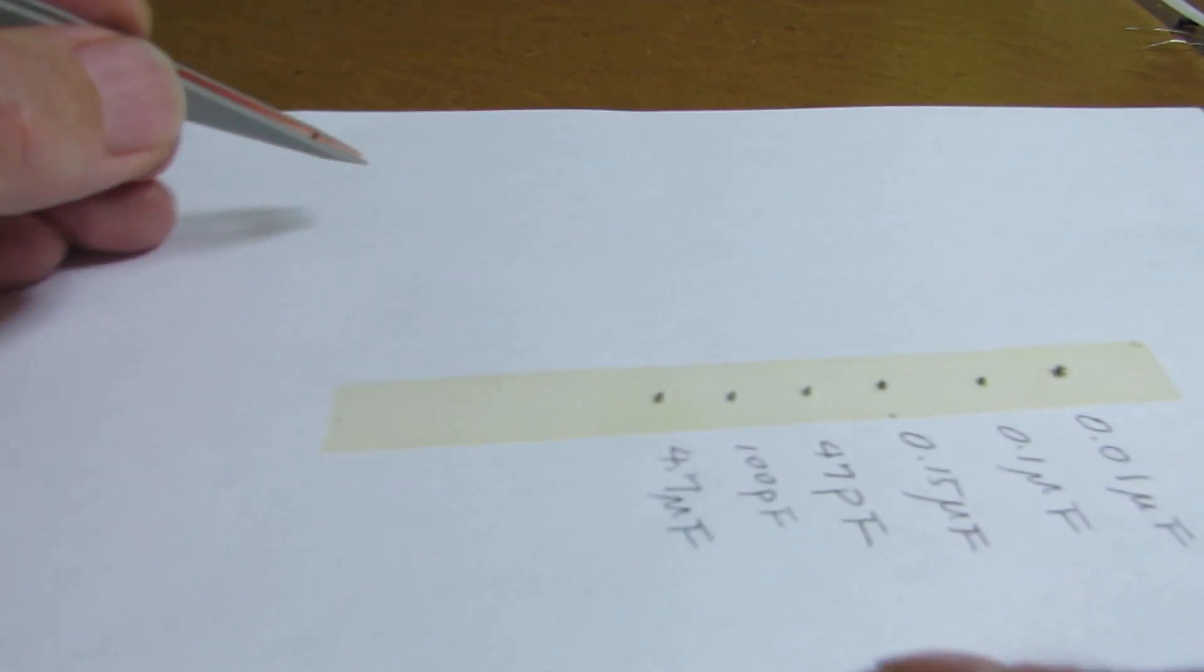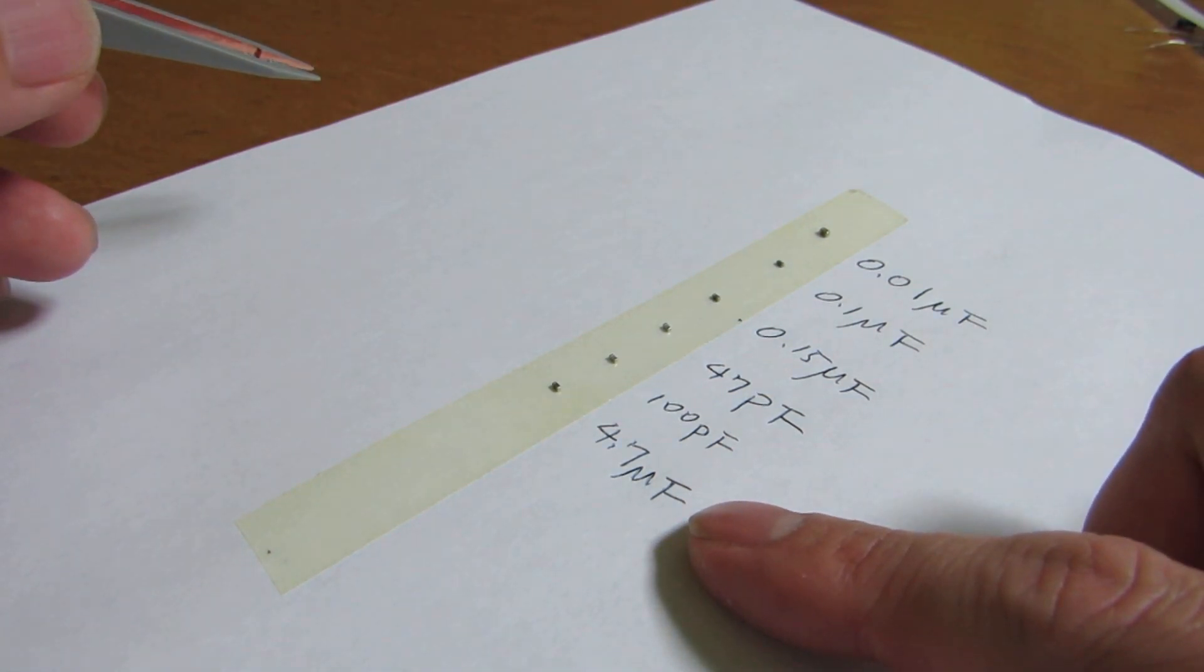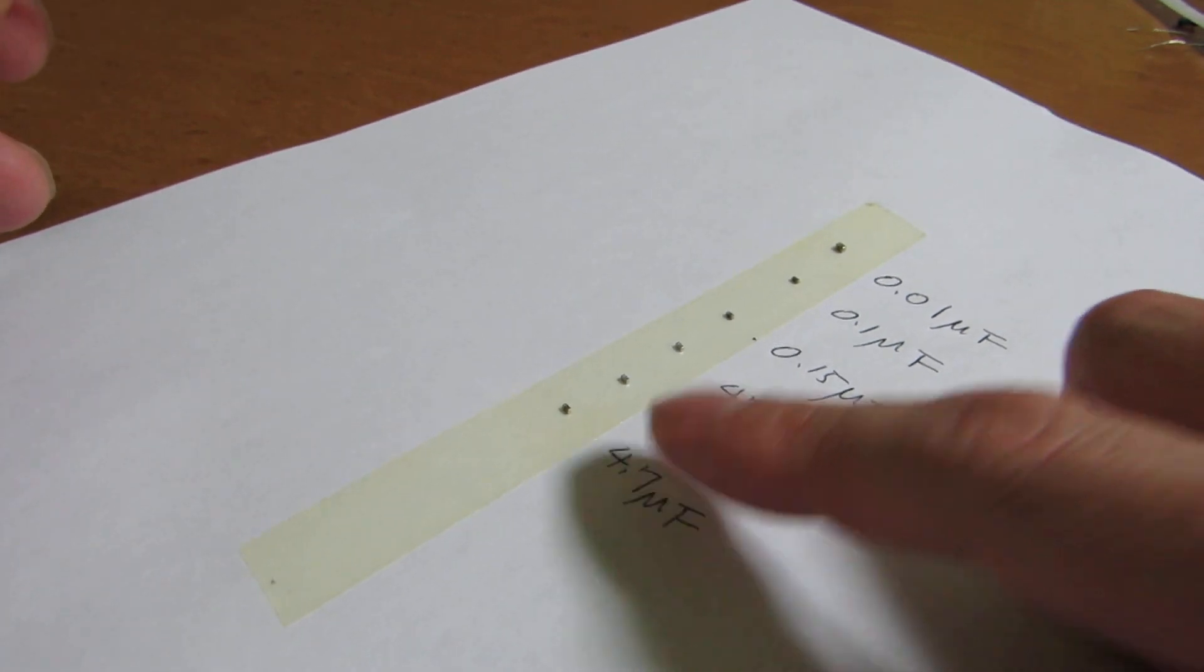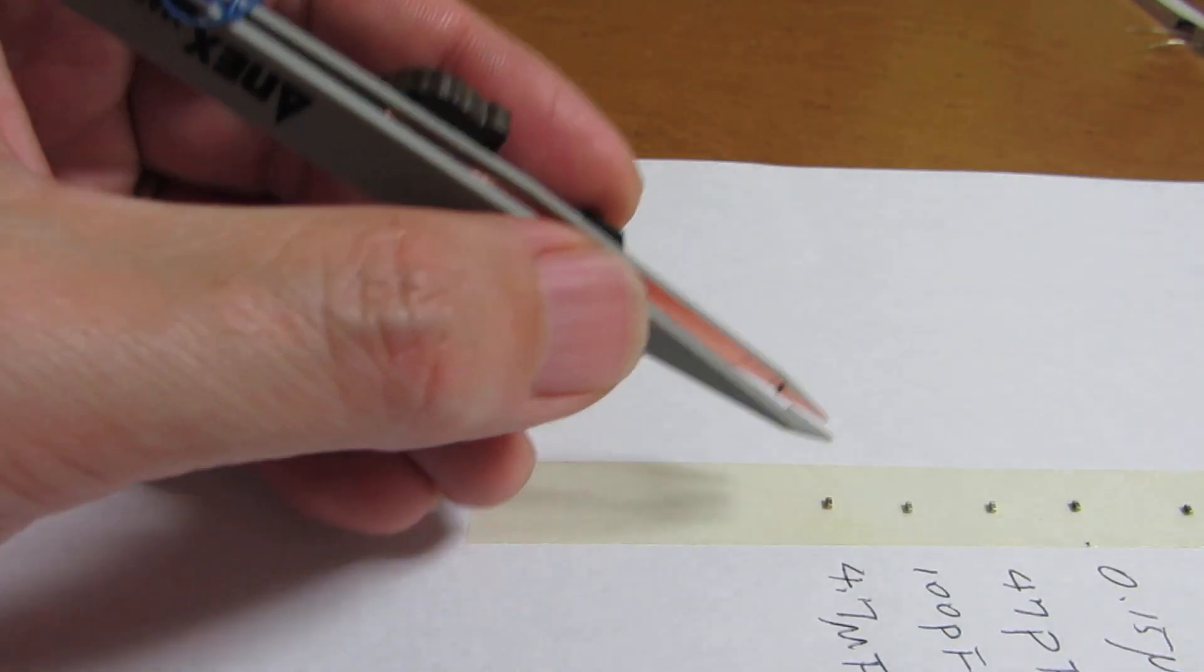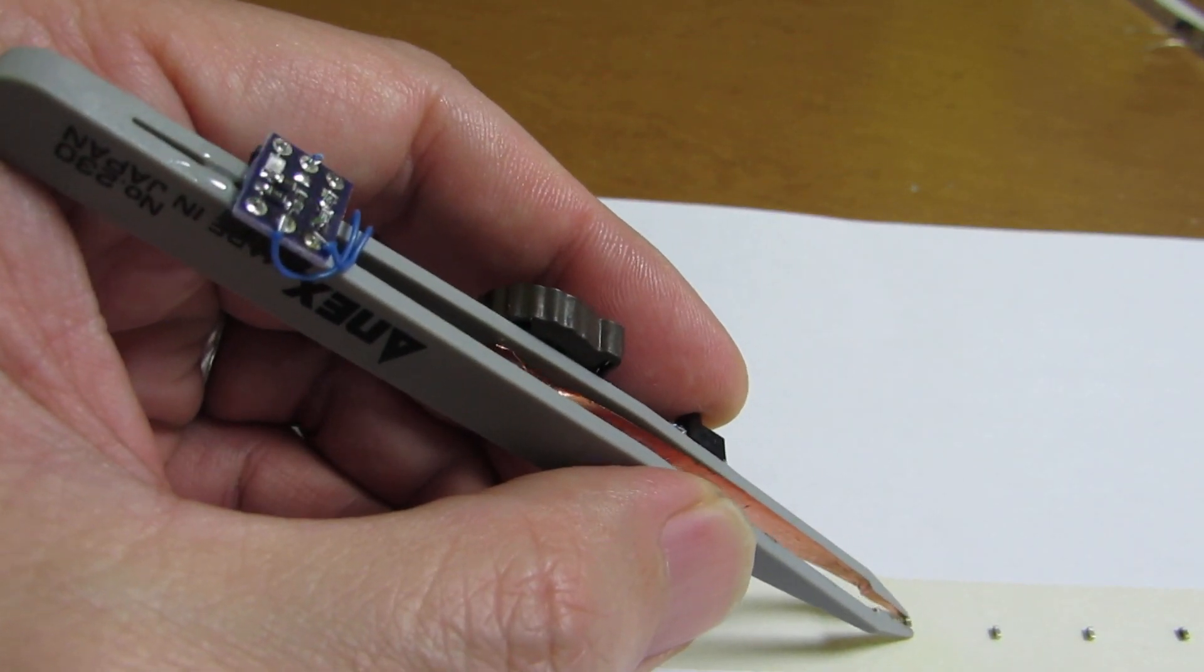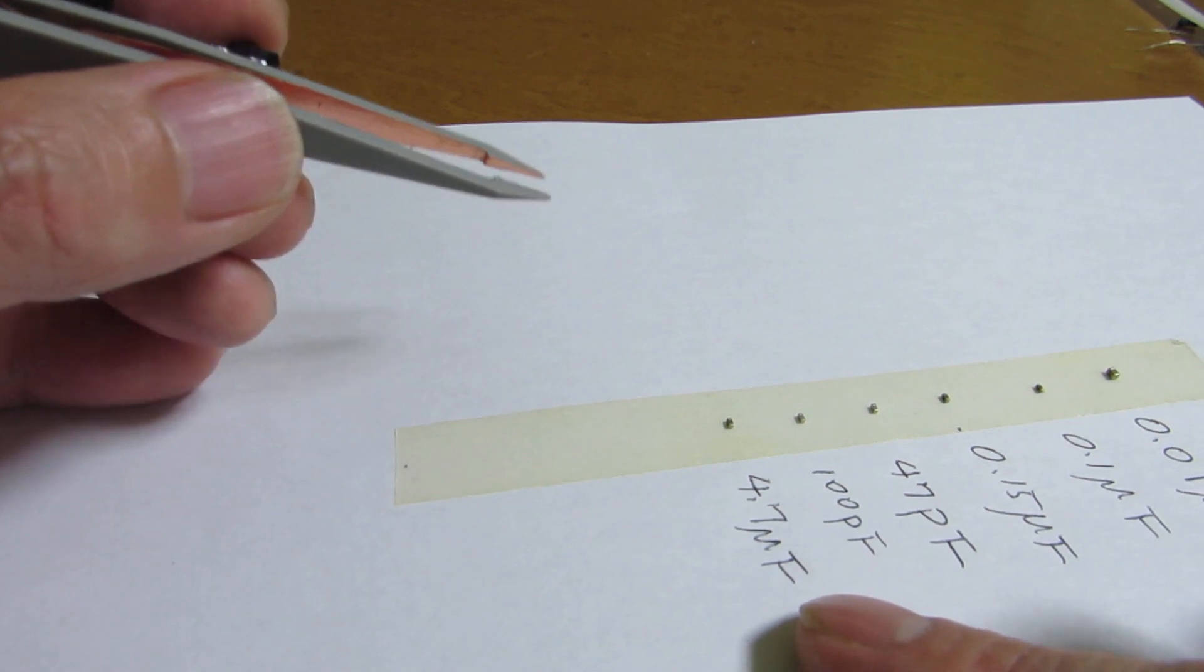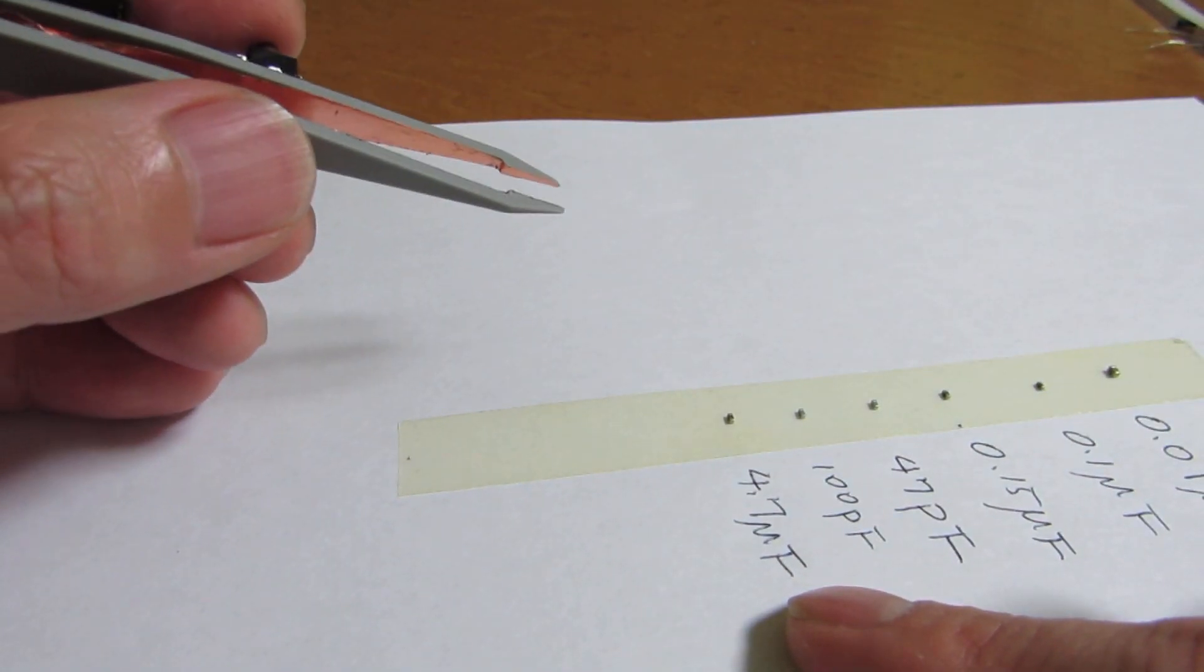But the case of 4.7uF. The new recent technology enables such high capacitance in even such a small size. Let's see how it reacts. Yes, it's reacting, meaning that this small chip capacitor is more than 0.1uF.